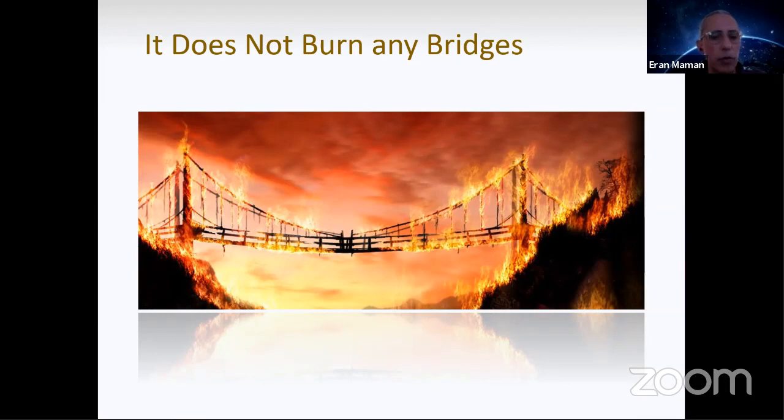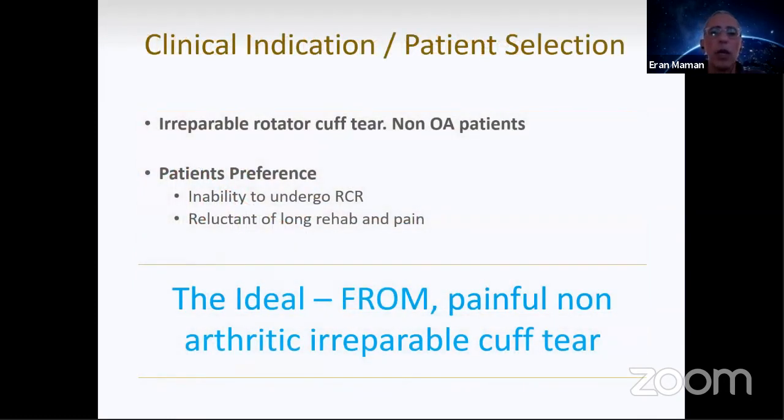The nice thing about the balloon is it doesn't burn any bridges. You see we can put the balloon, and if it fails we still have other options. If I have to pick the right patient today, it will not be the same as I did 10 years ago. 10 years ago we tried it on very young patients, very old patients, partial tear, complete tear, massive tear, some degree of osteoarthritis. But today I can say with much more confidence than before that the right patient for me will be with irreparable rotator cuff tear, non-osteoarthritic patient, and as well patient preference. There are patients that don't want rotator cuff repair rehabilitation or cannot go through major surgery.